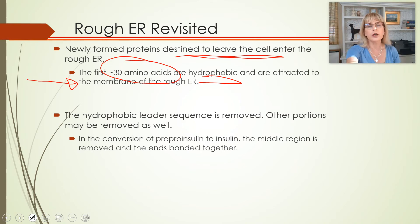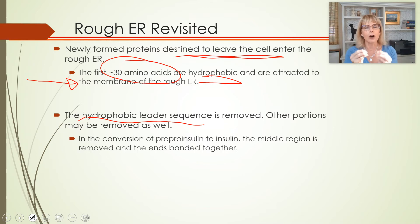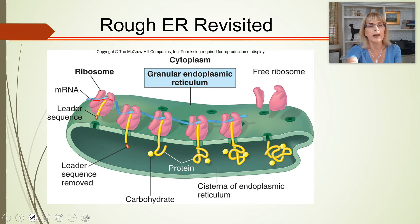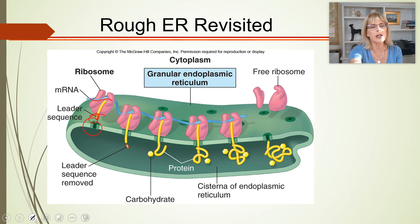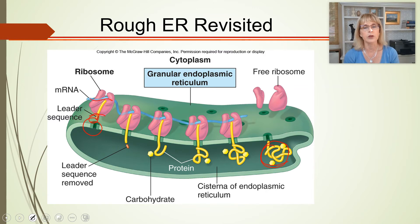These 30 amino acids are called the hydrophobic leader sequence. They get removed because the protein doesn't need them, but they target the ribosome so that protein creation happens inside the rough endoplasmic reticulum. The ribosome reads the messenger RNA, the hydrophobic leader sequence gets attracted to a pore in the rough ER, and the rest of the protein gets made inside.